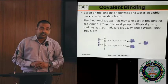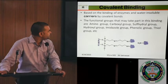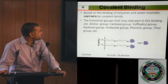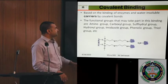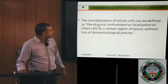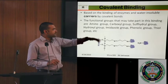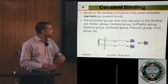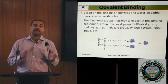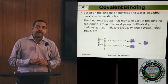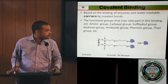Covalent bonding is stronger and irreversible in nature for enzyme immobilization. It is based on the binding of enzymes to water-insoluble carriers by covalent bonds. The functional groups that may be used for binding include the amino group, carboxyl group, sulphhydryl group, and hydroxyl group. A covalent bond is created between the carrier material and the enzyme, and care must be taken that the enzyme's active site remains open, otherwise activity loss will occur.